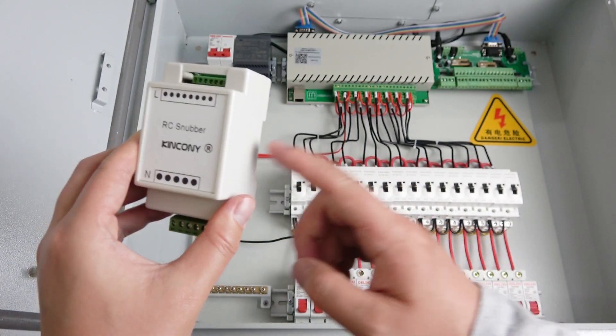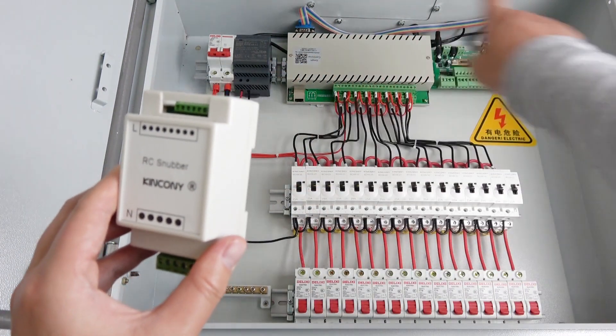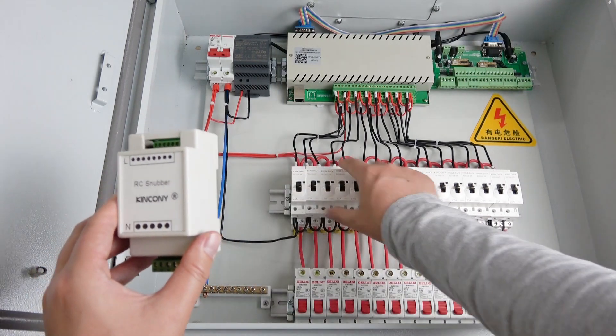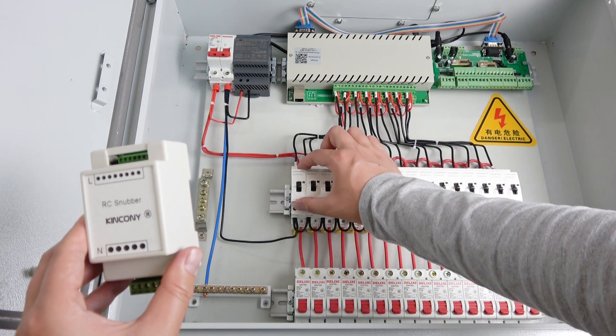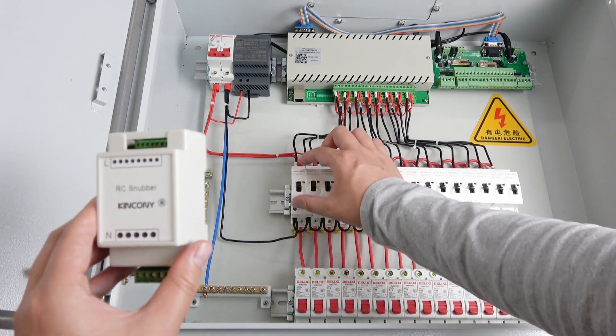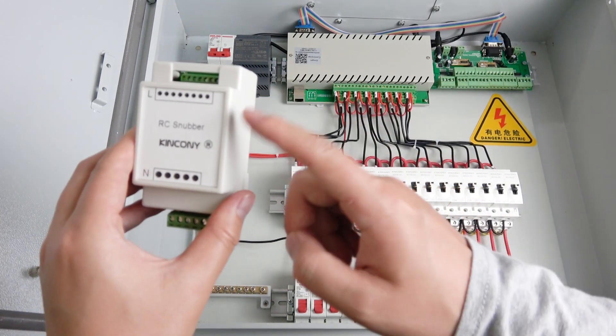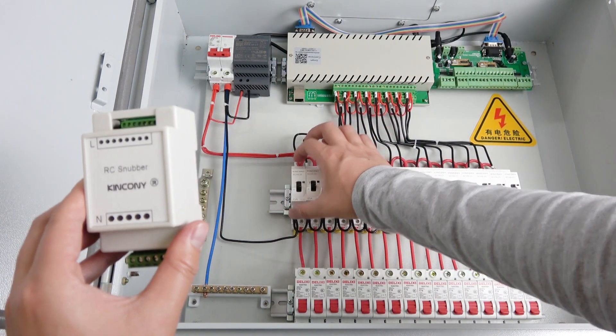This part works with the power distribution box. This mainly is for the AC contactor. Because there is a coil inside the AC contactor, it will have interference, and using this part will cure the spark of the coil.